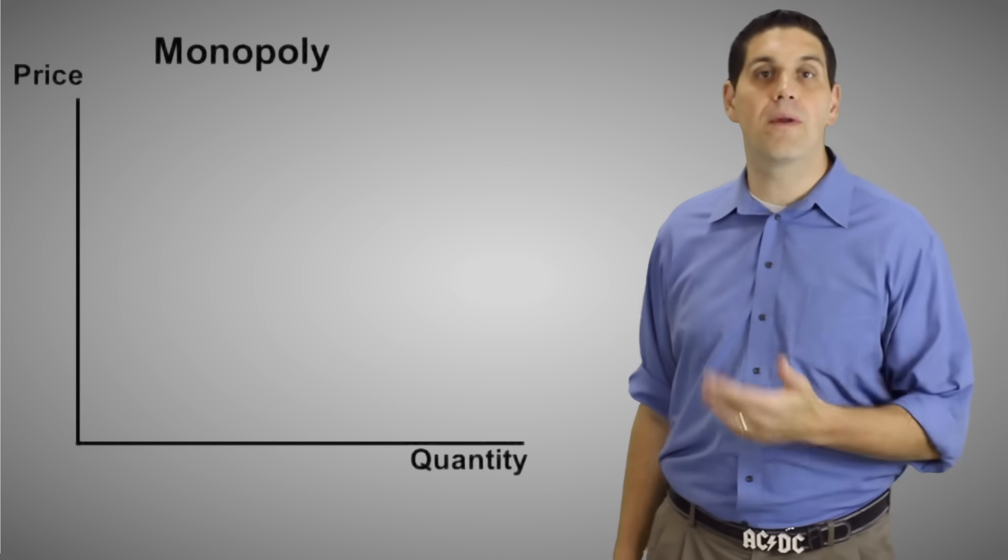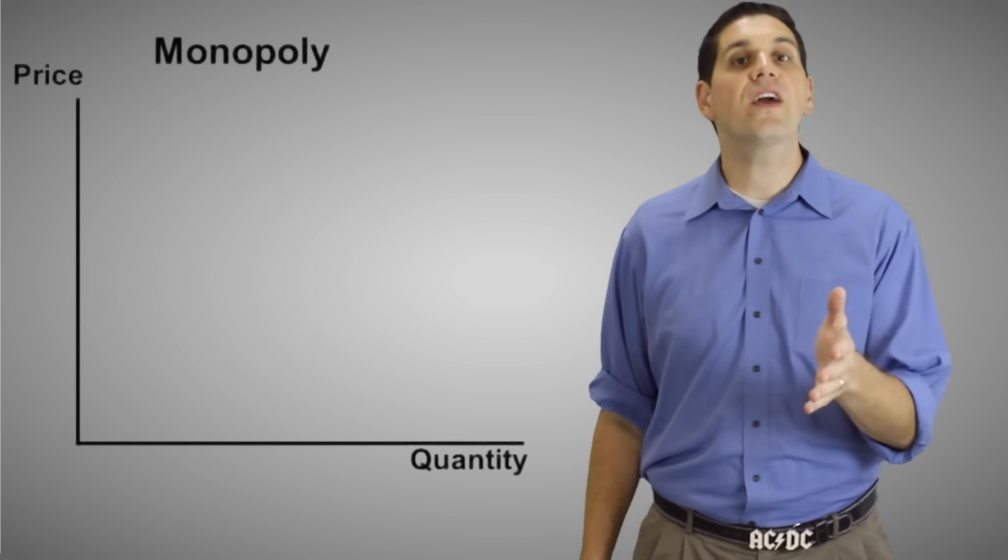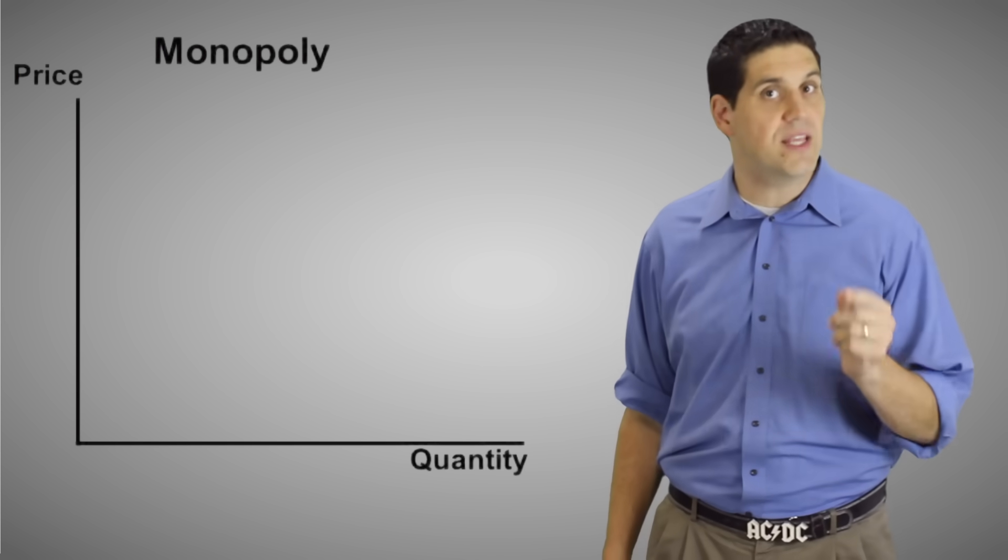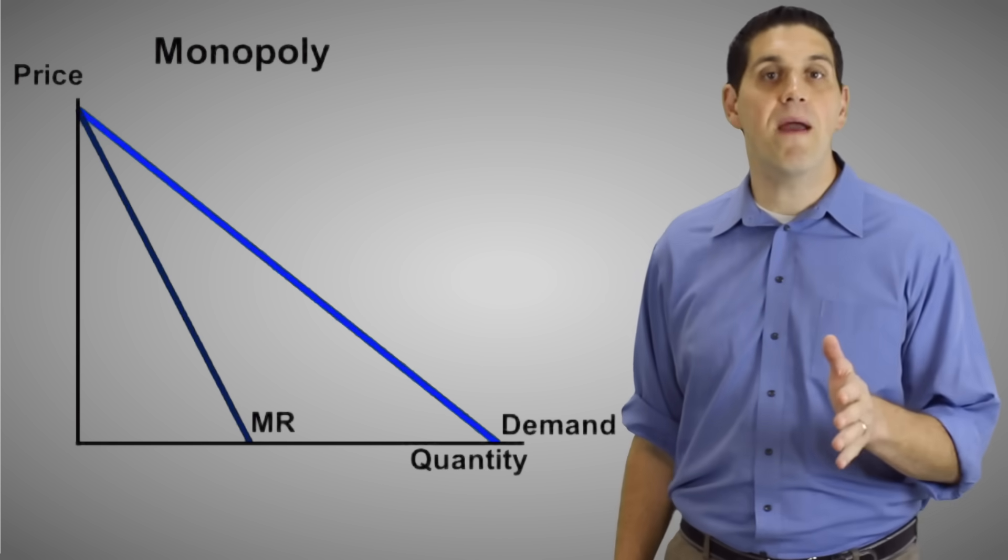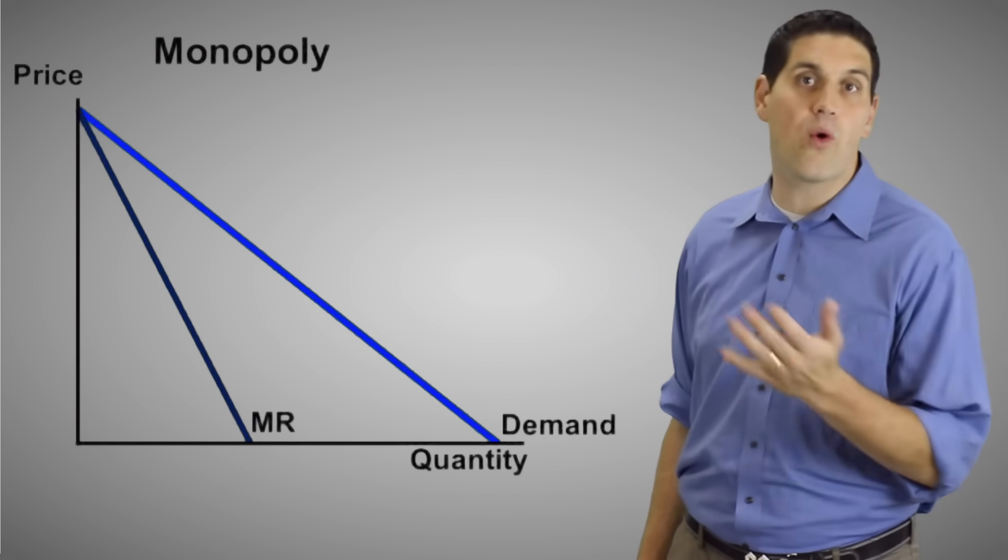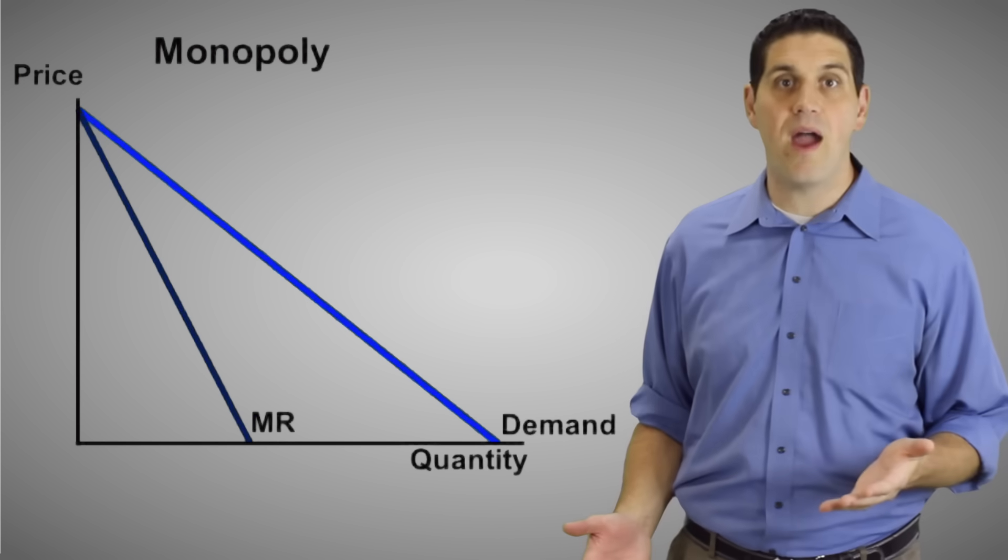Now let's go straight to the graph for a monopoly to help you understand what it looks like. In perfect competition, there's a horizontal demand curve that was equal to the marginal revenue curve. But it's not like that for a monopoly. When you're a price maker, you can sell your product for a very high price or you can sell it for a low price. You determine the price.